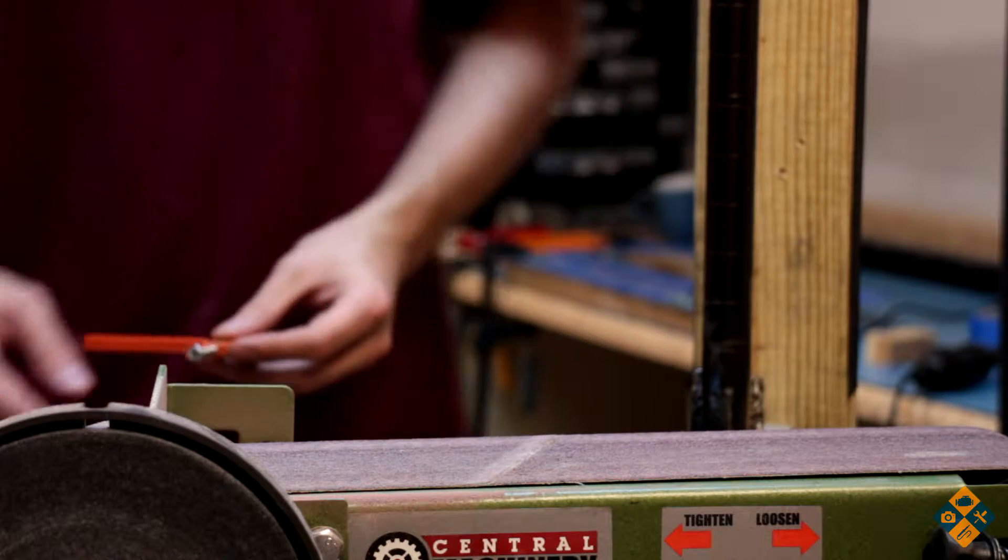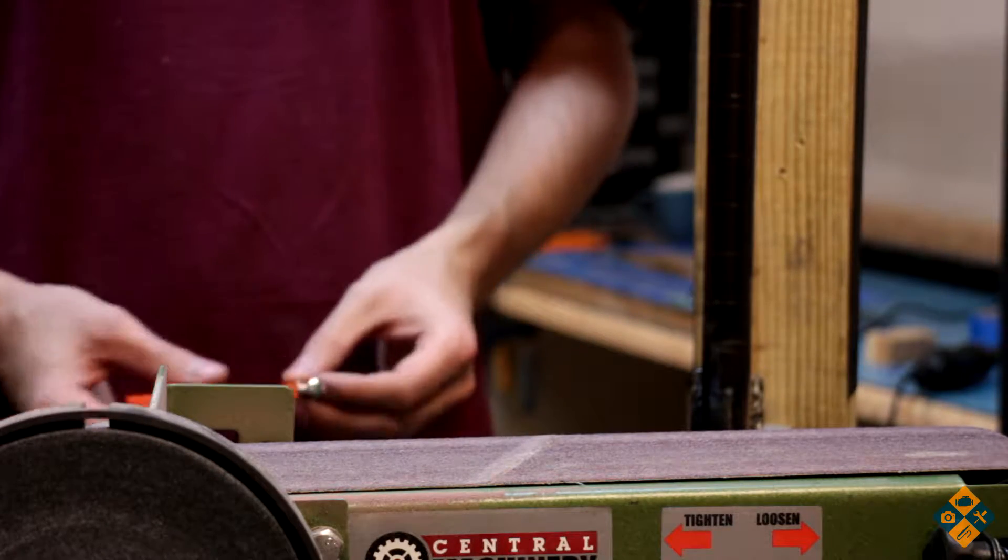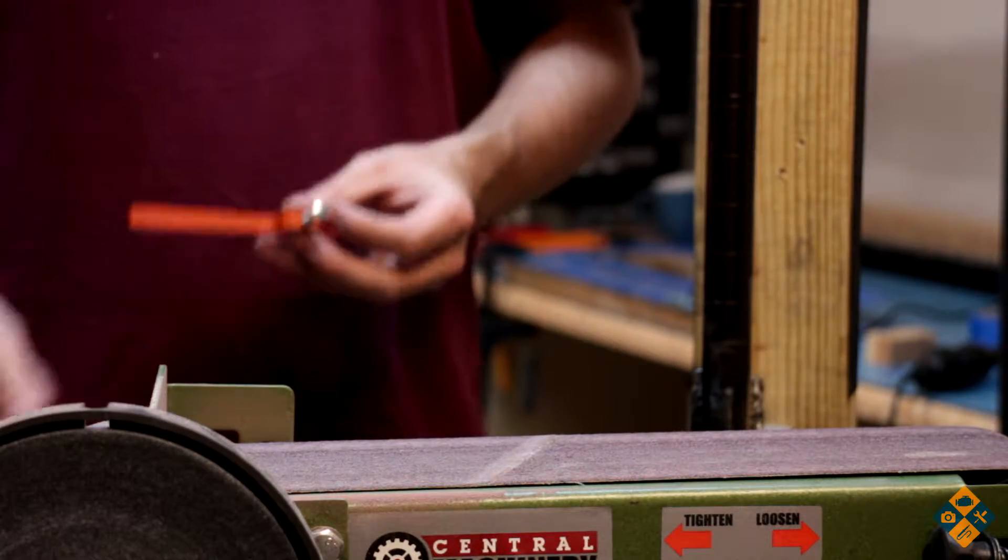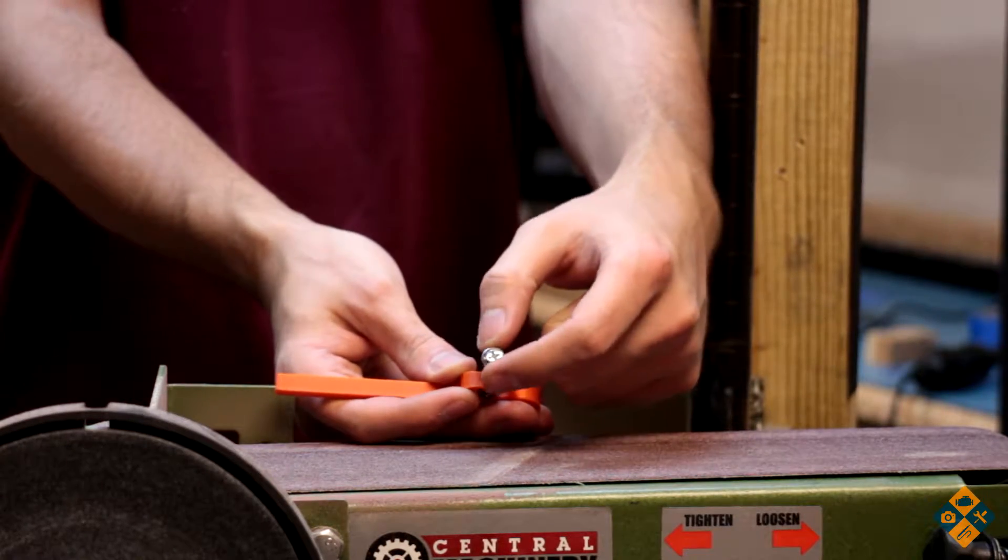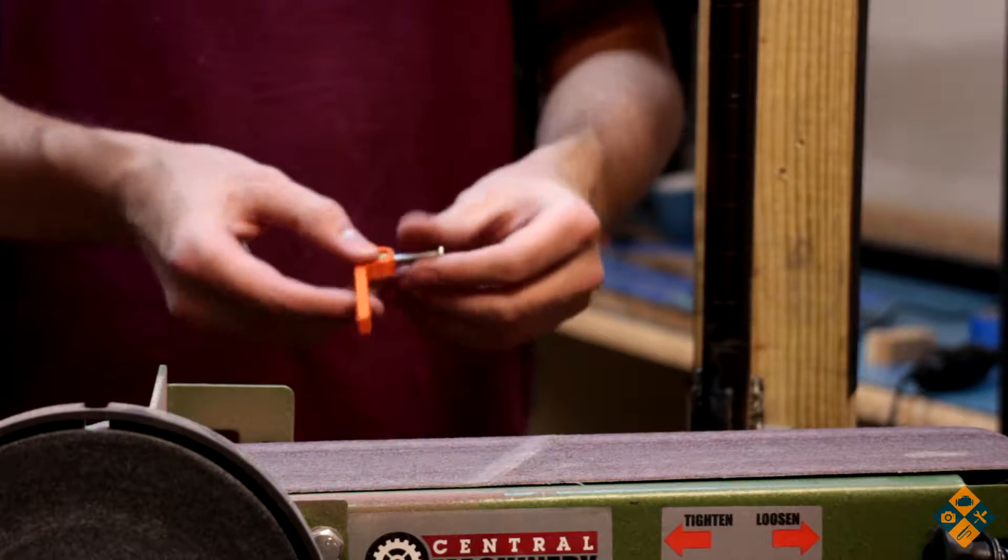This is a screw head sand jig. It's really cool because you can take a screw and sand down the head to be a lot thinner than it currently is.